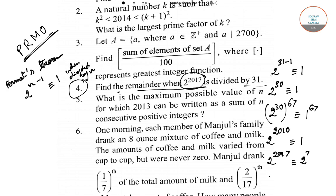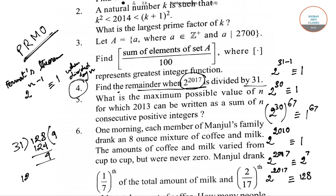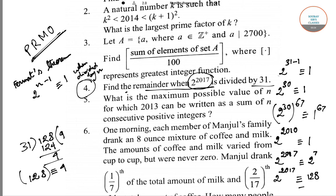2 to the power 7 equals 128. But when dividing by 31, we cannot have a remainder of 128. So we divide 128 by 31, which gives a remainder of 4. Therefore, 2 to the power 2017 gives a remainder of 4 when divided by 31.